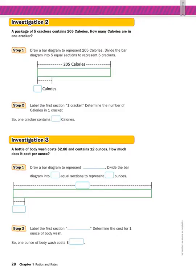In Investigation 2, the numbers get a little more complicated, and they do less of the bar diagram for you, so you're going to have to do more. This says a package of five crackers contains 205 calories. How many calories are in one cracker? In step one, they drew a bar diagram — this whole green box — to represent all 205 calories in that packet. Since there are five crackers, we want to find out how many calories are in one. We're going to split this into five equal sections.